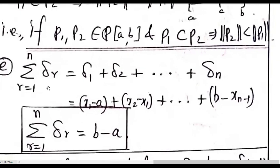An important result: the sum of δ_r for r = 1 to n equals b − a. Expanding: δ_1 + δ_2 + ... + δ_n, where δ_1 is the length of the first subinterval, δ_2 is the length of the second, and δ_n is the length of the last subinterval.